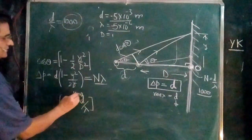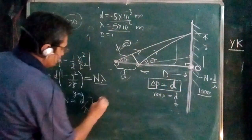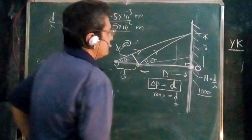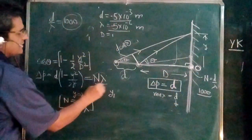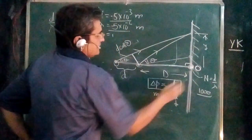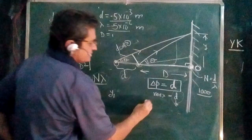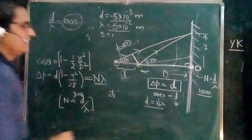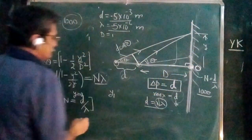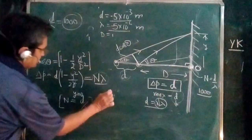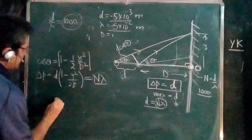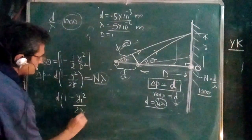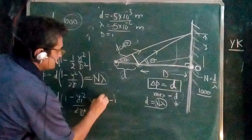At y = 0, path difference is maximum (equal to D = 1000λ). As we move away, the path difference decreases. So the first bright fringe away from center corresponds to n−1 order. For the first bright fringe position y₁: D[1 − y₁²/(2D²)] = (n−1)λ.